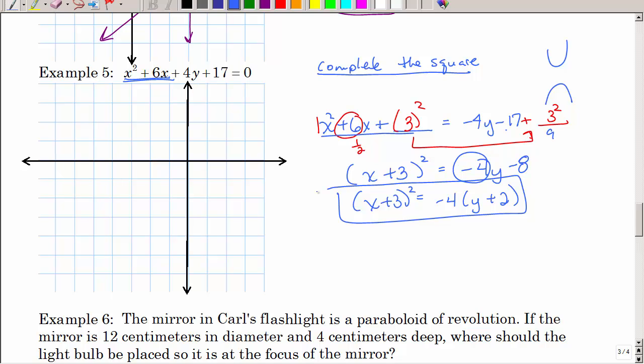And look, that's now in what we would call standard form. Completing the square, putting it in standard form. So now what's my vertex? Negative 3, negative 2, because those are both pluses and the formula has a minus, you have to take the opposite.